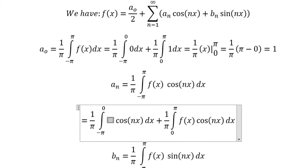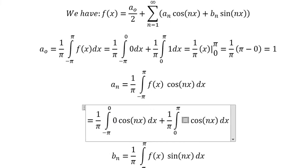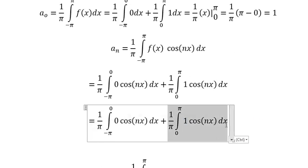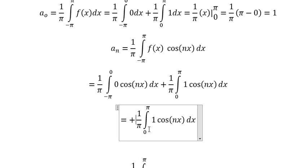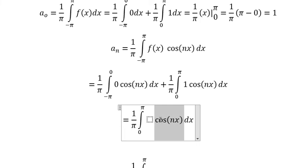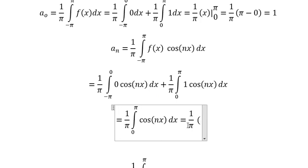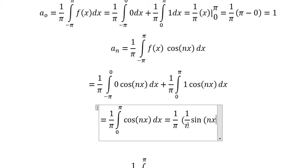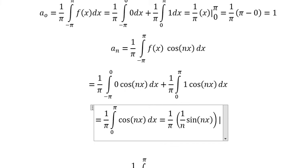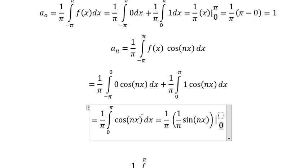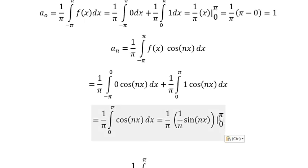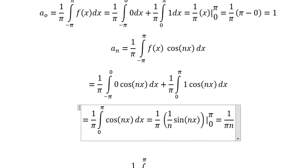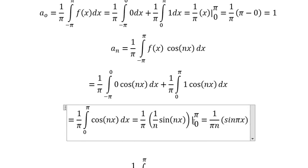For aₙ, we substitute zero for the first part and one for the second part. After simplification we are left with the integral of cosine(nx). The integral of cosine(nx) gives one over n times sine(nx), evaluated from zero to b. Substituting b and zero, we get one over b times sine(nb). Since sine of zero equals zero, we have only sine(nb) remaining.